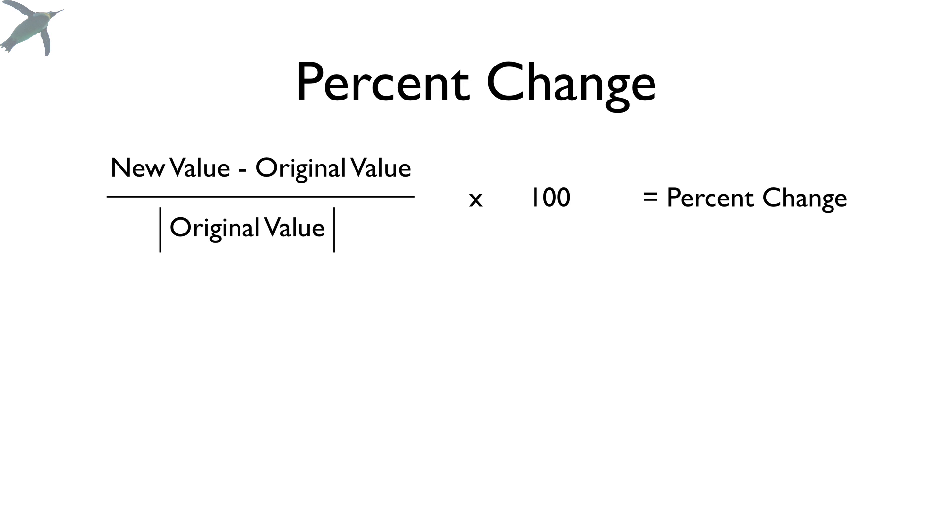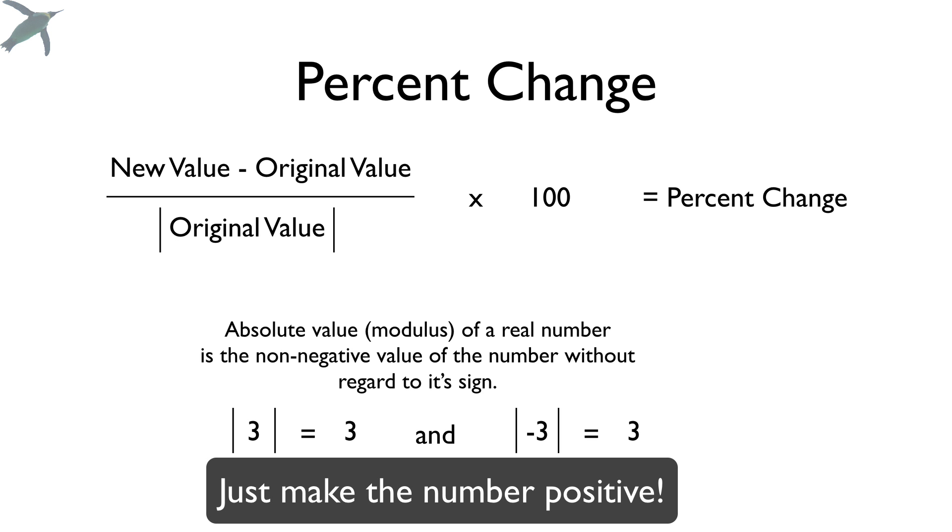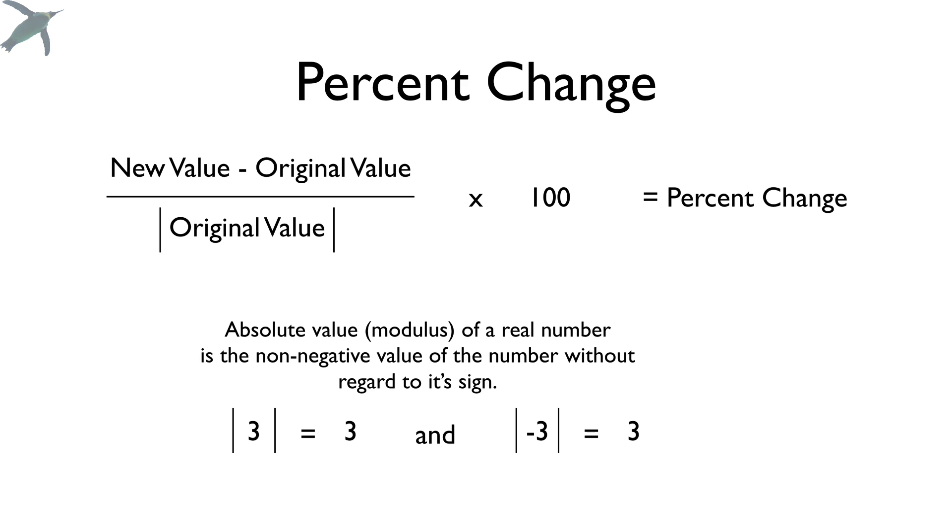The last thing that we're going to do is talk about percent change. Because this is something that many times you will find yourself having to graph. And there is actually a way to calculate percent change. You're going to take the new value minus the original value divided by the absolute value of the original value. Sometimes that's called a modulus. And whatever the number is, whether it's negative or positive, you make it positive. That's all an absolute value is. You can think of it as the distance from zero on a graph. And that is going to give you the percent change.